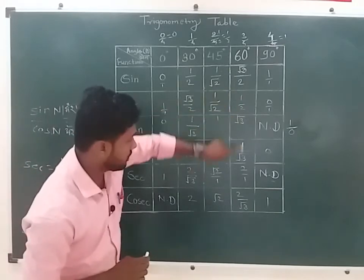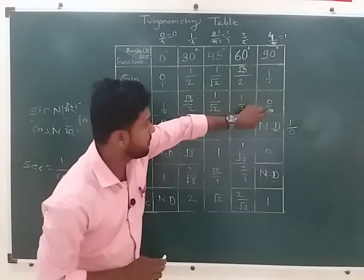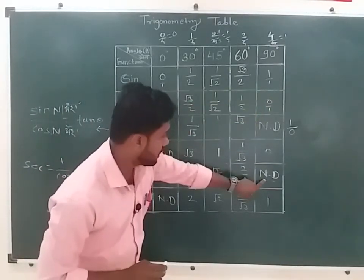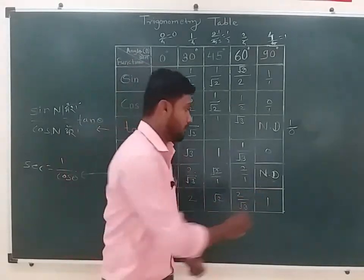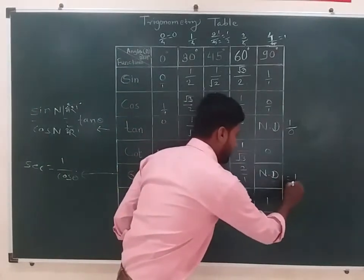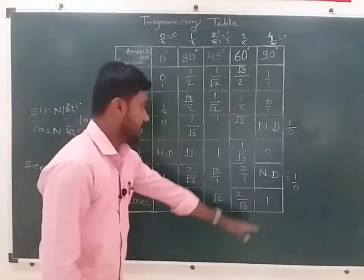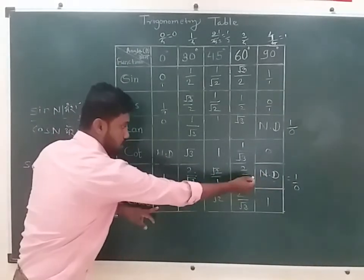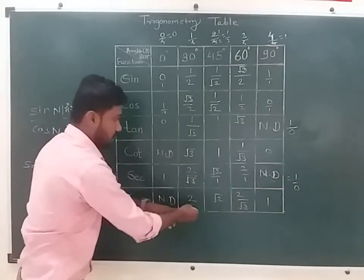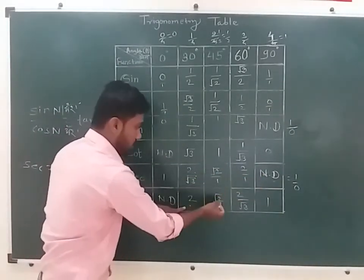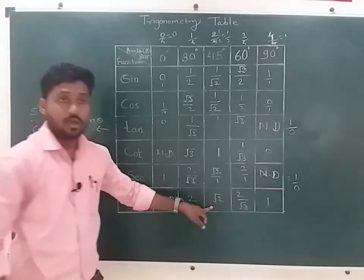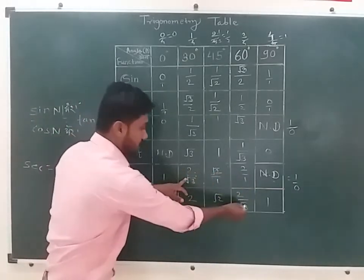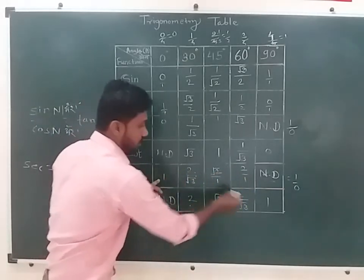One upon one will be one upon zero. So it means not defined. What is one upon zero? It means not defined. Two by one will be two upon one will be one. Two by root three will be one.